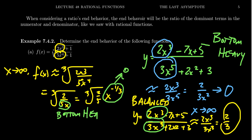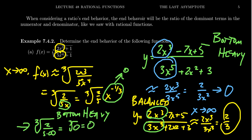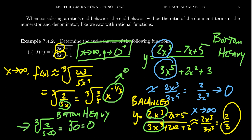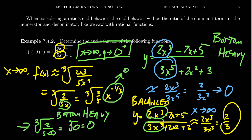As x approaches infinity, this thing is going to approach the cube root of 2 over 5 times 0 — wait, not 0, but infinity. When you divide by infinity, the denominator keeps getting bigger and bigger, so the ratio gets smaller and smaller. This is going to look like the cube root of 0, which equals 0. So as x approaches infinity, y approaches 0. And we can note it's approaching 0 from above, because the denominator looks like positive infinity and the numerator is positive 2 — so the ratio is a small positive number approaching 0.